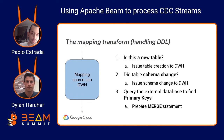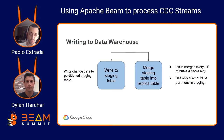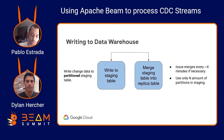After the mapping transform, we have our transforms that write data to the data warehouse — BigQuery in this case. On the left side, we have a write to a staging table. This is a normal BigQuery write where we take our rows, which contain the full row from the source table as well as some metadata about the type of change in the source. We write this to partitioned tables on the destination, which serves as a staging table that keeps a log of all the changes historically.